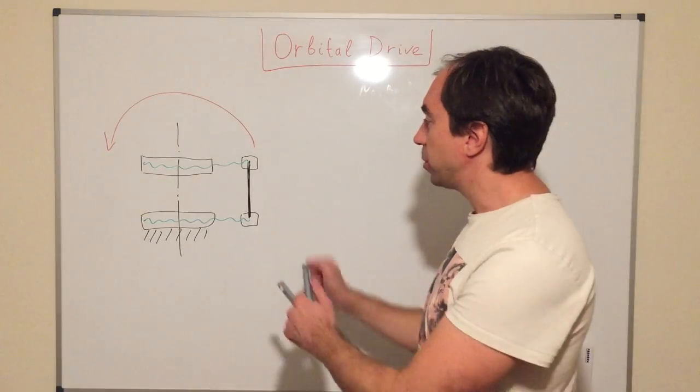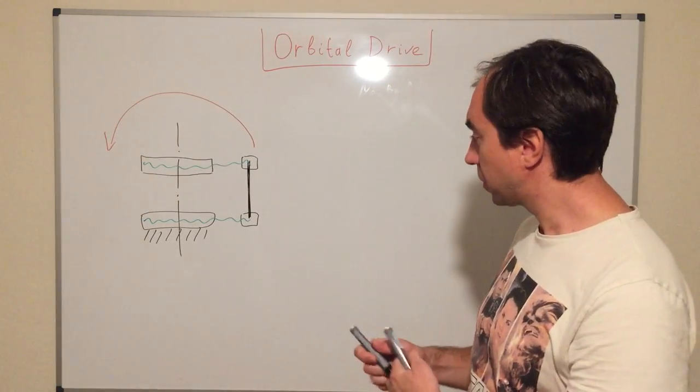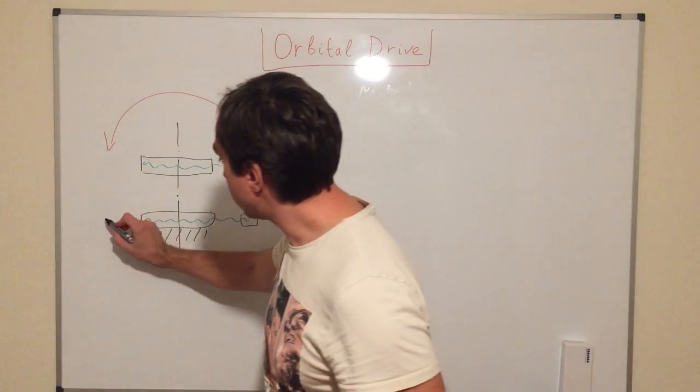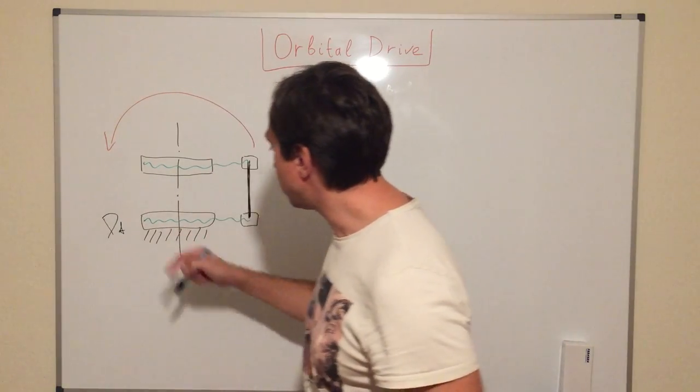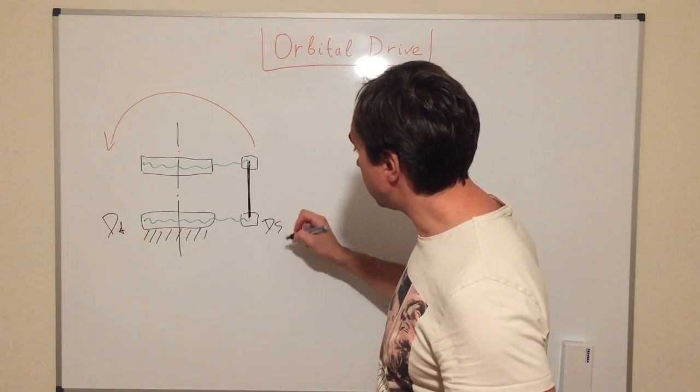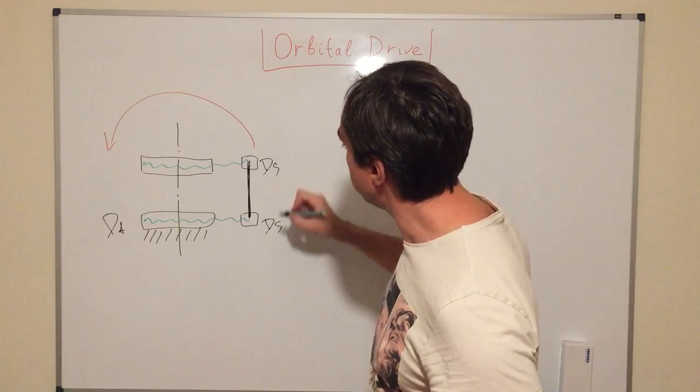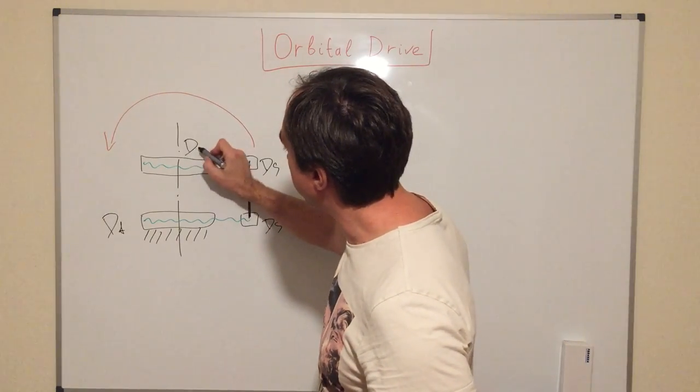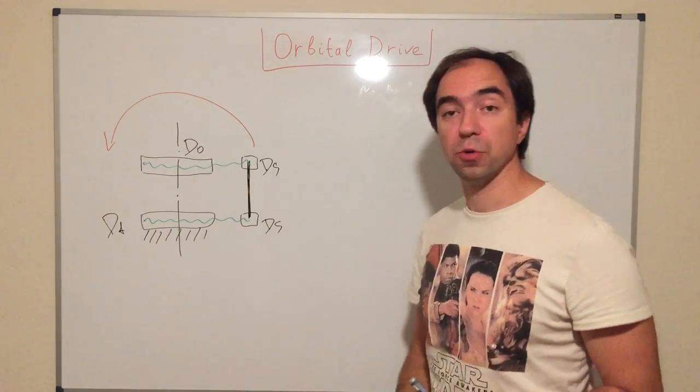So, now let's calculate the reduction ratio of this system. We assume that DF is the diameter of the fixed pulley, DS is the diameter of the smaller pulleys, and D_output is the diameter of the output pulley.